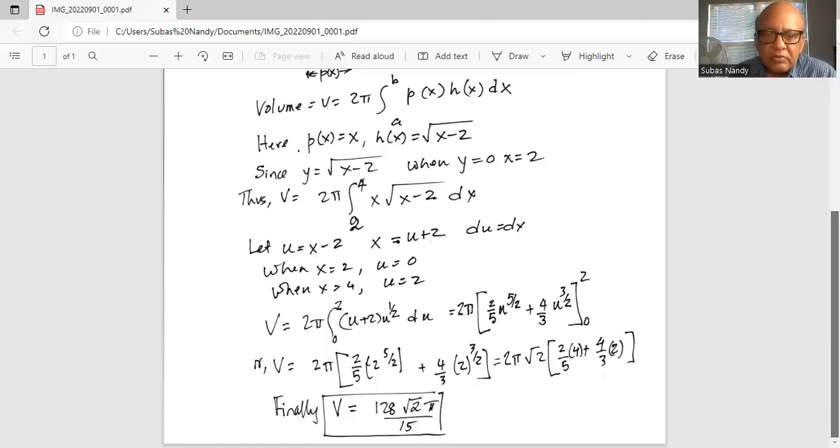So this is 2 pi square root of 2 and then we have inside 2 fifth times 4 plus 4 third times 2 which is finally if we simplify, volume is 128 square root of 2 pi divided by 15.